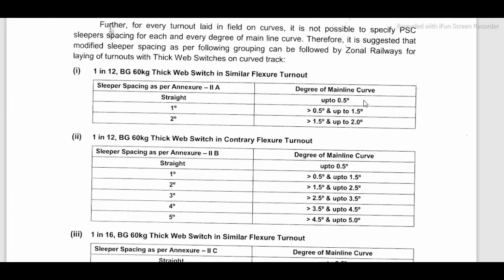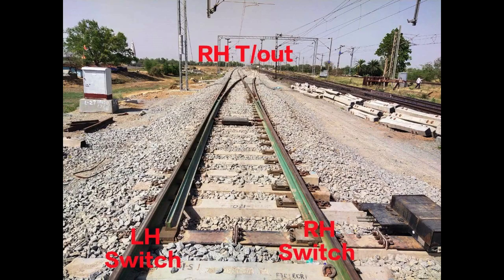Sectional speed is also given at 110 km/h. So practically, a 1 in 12 TDMS straight switch presents no problem at all up to 1 degree, whether the turn out is similar flexure or contrary flexure.